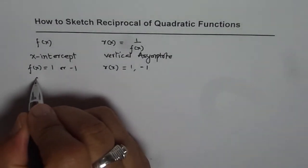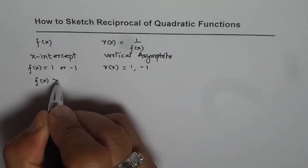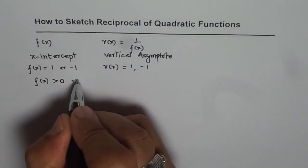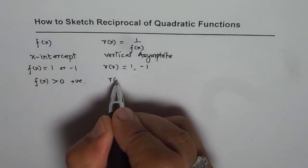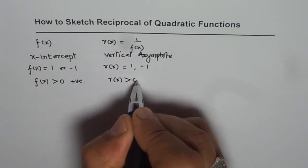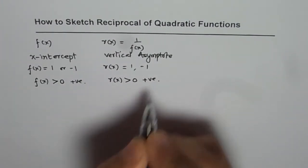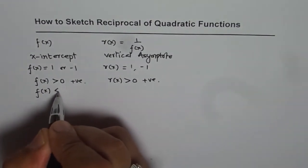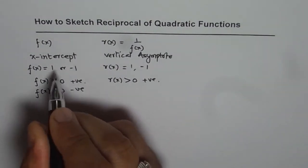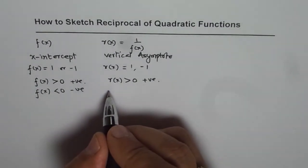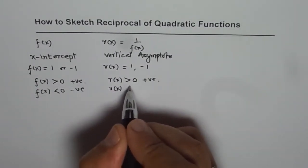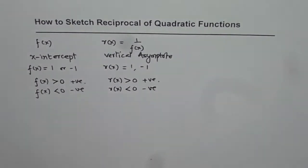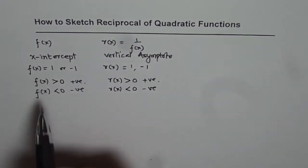We also observe that if f of x is greater than 0, meaning it is positive, then the reciprocal is also greater than 0. Similarly, if f of x is less than 0 — if the function is negative — then in that interval the reciprocal function is also less than 0, it is negative.